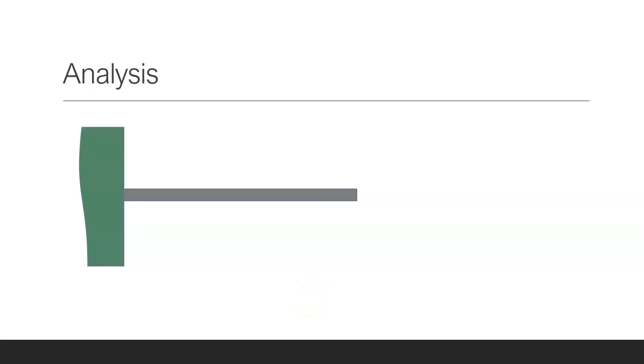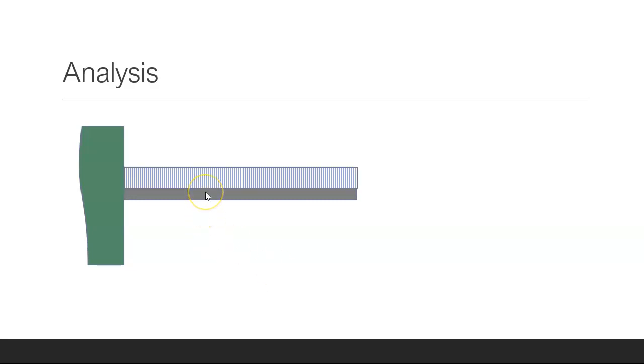In this video we're going to look at the deflection of a cantilever beam that has a uniform distributed load. If we have the beam, the uniform distributed load is equal to w naught and the beam has a length L.